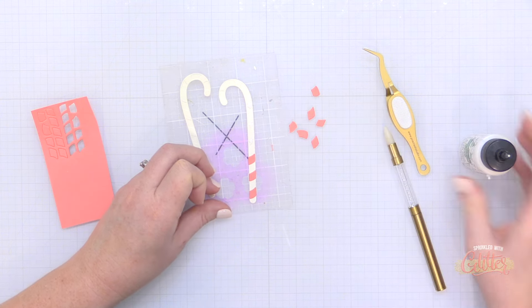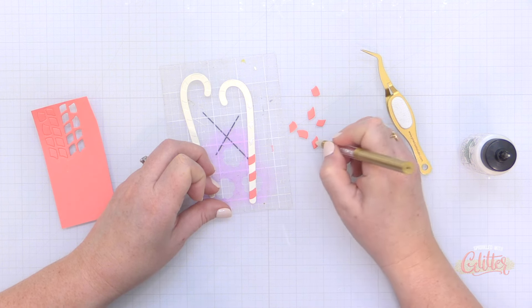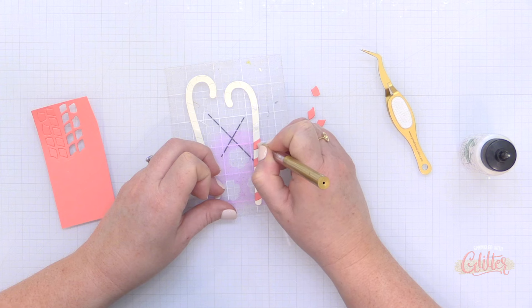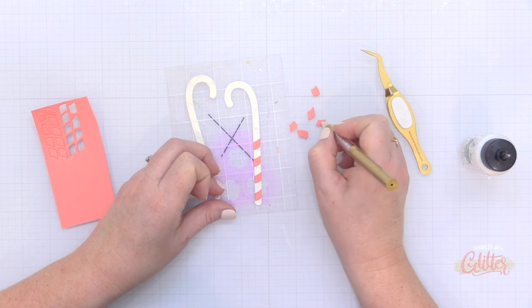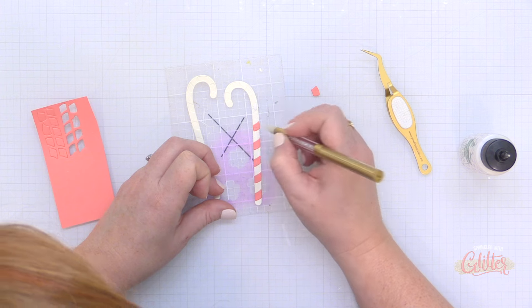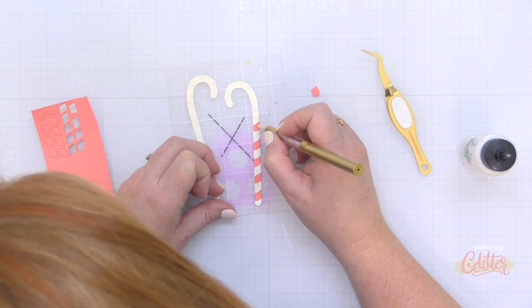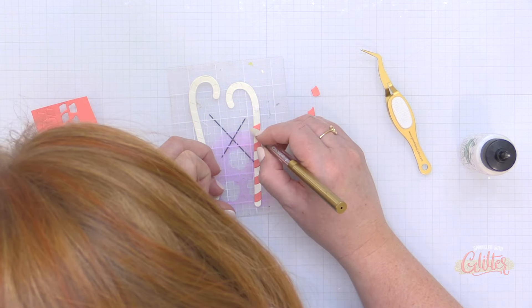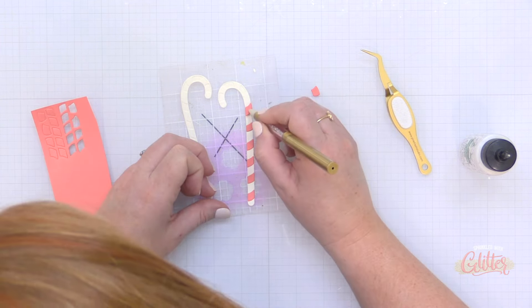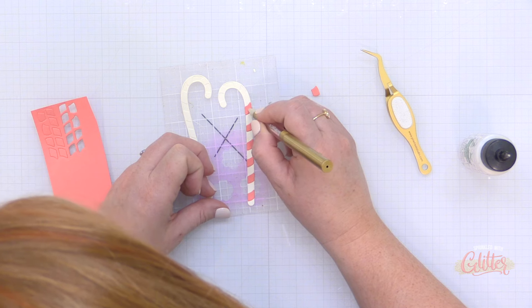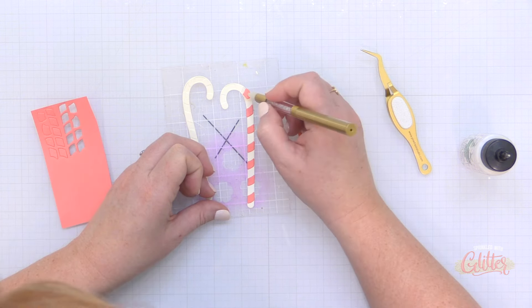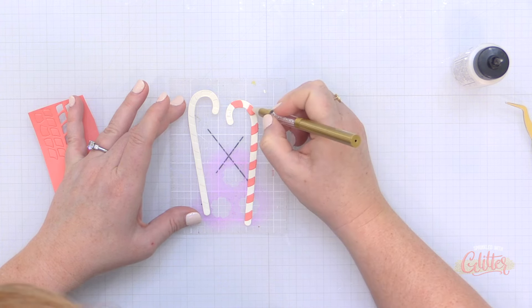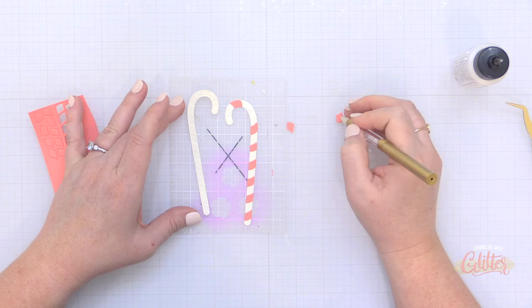Now something that I really love about this candy cane and holly die set from Spellbinders is that there are candy canes that face both directions. And why is this cool? Well because you can create a heart out of them and you can have them crisscross, and then also if you have a little stocking or a pocket that you're tucking them in on your card project you can pick the one that works best for the direction that you want it to face. So it's kind of nice that you have both of those candy cane options.